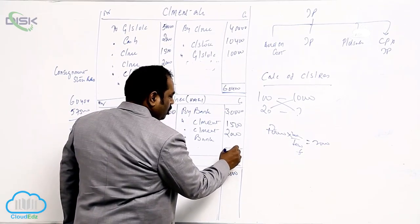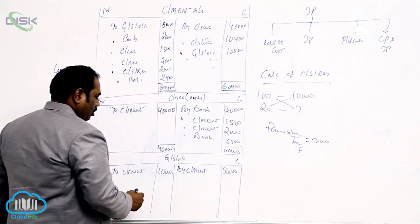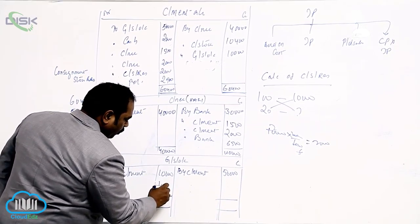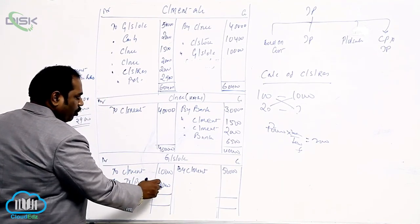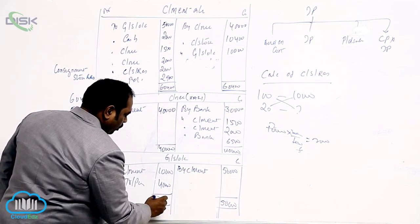40,000. 40,000 minus 33,500. 6,500 is what? By bank. So the balancing figure should be transferred to what? Trading or purchase. Always we should transfer only the cost price to trading or purchases. 50,000.